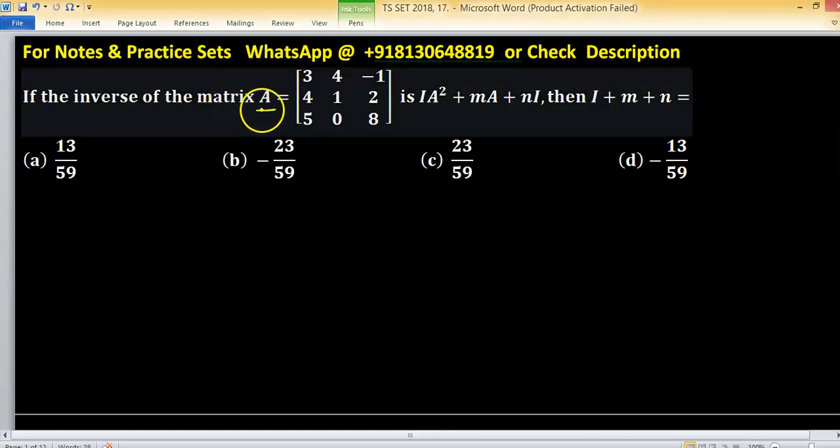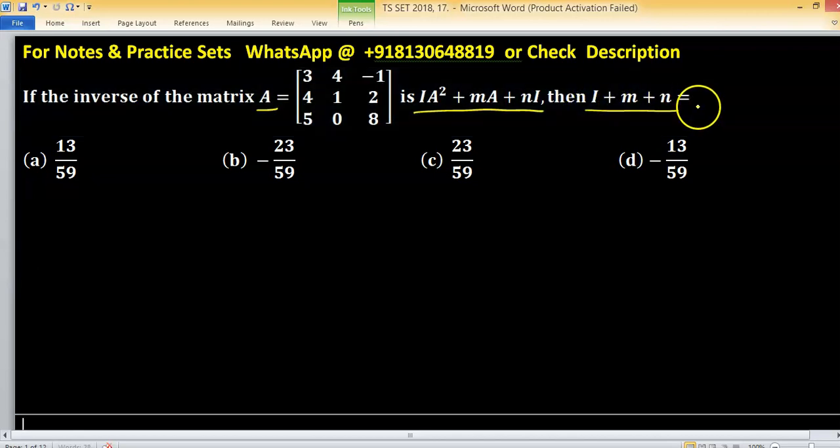If the inverse matrix of A can be written in this form, then we have to find the value of this one, which is i plus m plus n.